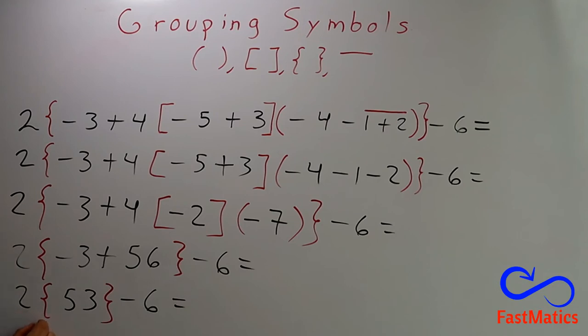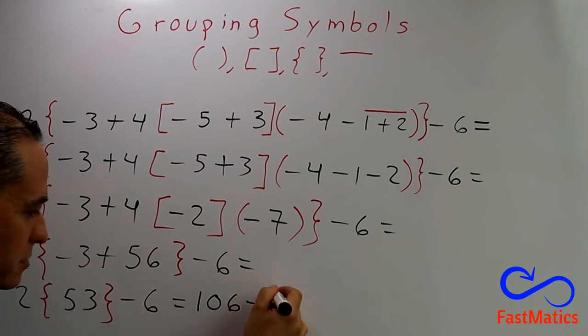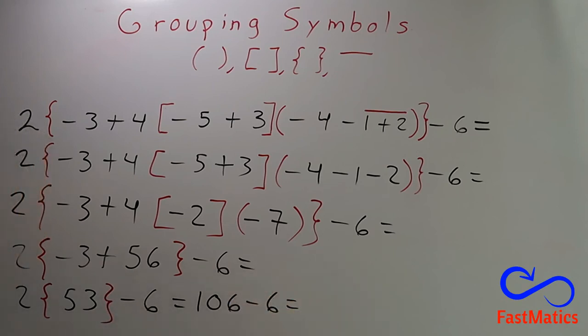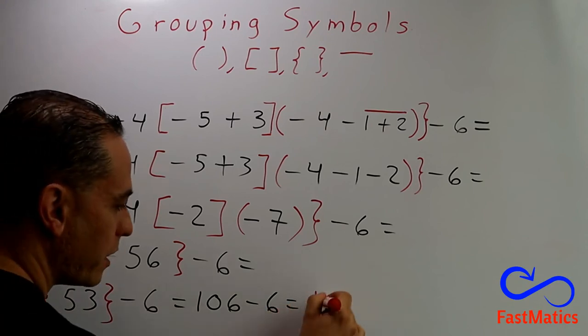After that, if the number 2 is close to the 53 without a positive or negative sign between them, you are going to multiply it. 2 times 53. It is 106. After that, minus 6. The final answer will be 100.